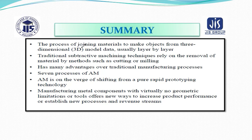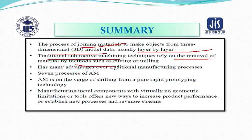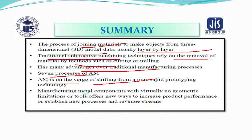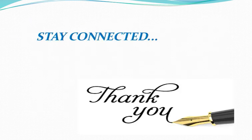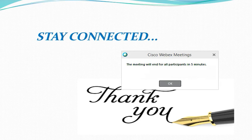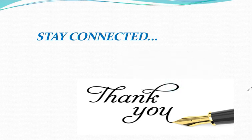In summary: additive manufacturing is the process of joining materials to make an object from 3D model data, usually layer by layer. Traditional subtractive machining technique relies on removal of material by methods such as cutting or milling. Seven processes of additive manufacturing are associated with the field. Additive manufacturing is on the verge of shifting from a pure rapid prototyping technology to manufacturing of metal components with virtually no geometrical limitations or tooling, offering new ways to increase productivity, performance, and establish new process and revenue streams. Thank you for watching — in the next lecture we are going to upload a lecture on CNC machining.